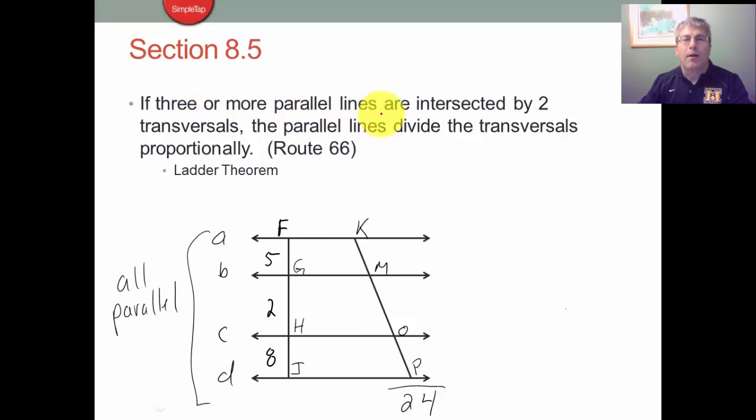But it says if three or more parallel lines are intersected by two transversals, so I've got my four parallel lines here, and we have two transversals, FJ and my angle street KP. The parallel lines divide the transversals proportionally.